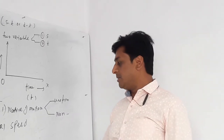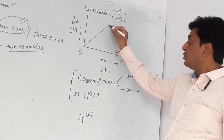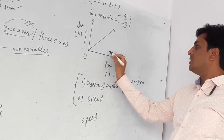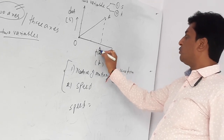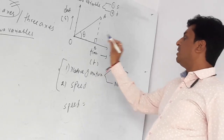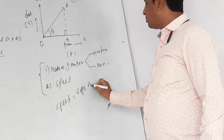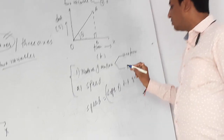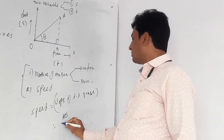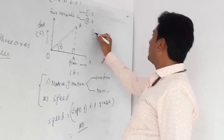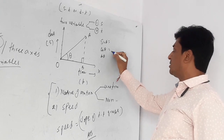To calculate speed mathematically from a distance-time graph, consider a type-1 graph where at time zero, distance is zero, and as time increases, distance increases uniformly. Take a point A on the line and draw a perpendicular to the base — this point is B — forming an angle theta. The slope of the distance-time graph gives speed. To calculate slope, we use trigonometric ratios: sine theta is perpendicular upon hypotenuse, cosine theta is base upon hypotenuse, and tan theta is perpendicular upon base. You will study these trigonometric ratios in mathematics.